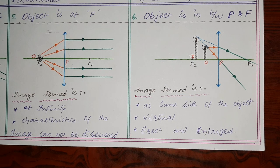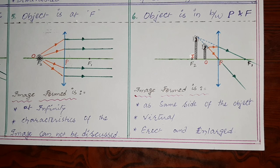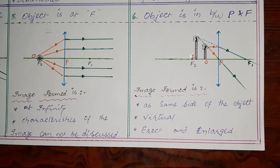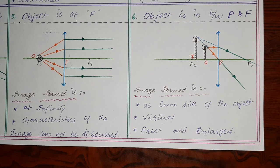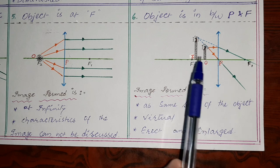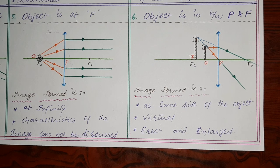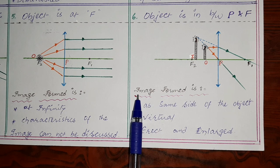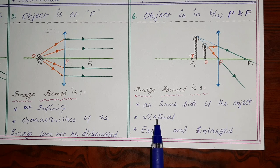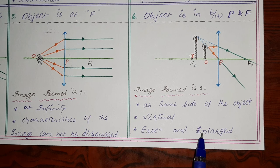The image formed on the same side is bigger in size — larger than the object — so the image is enlarged. It is not inverted, so it is erect. Images formed on the same side of the object are virtual images; they cannot be stored or saved. The characteristics: image is formed on the same side as the object, it is virtual, erect, and enlarged.